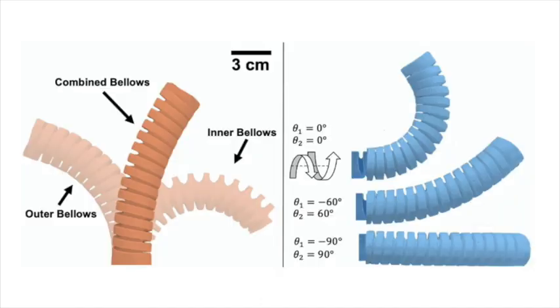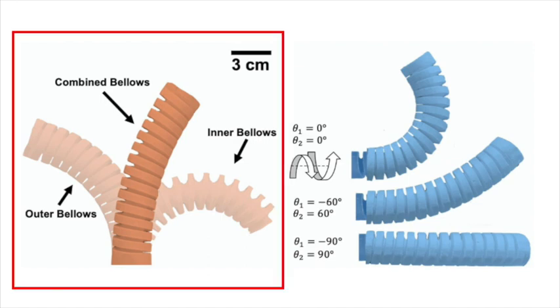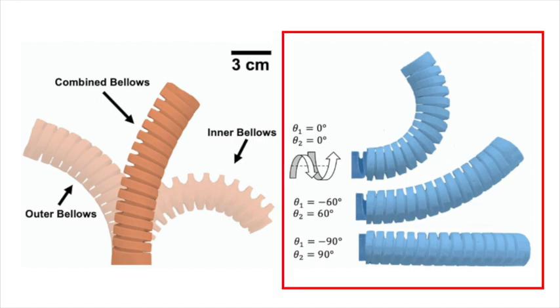These robots operate under the same principles as concentric tube robots. Pre-curved tubes are nested concentrically from one another, and through independent axial rotations, the interaction between the pre-curved curvatures produce an equilibrium shape.